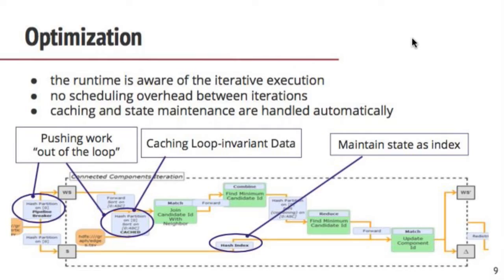Another thing we can do by letting the runtime know it's running an iterative job is perform several optimizations: we avoid scheduling overhead because the job plan is computed at the beginning, we can cache and maintain state in memory, and the Flink optimizer is smart enough to detect loop-invariant data — data used inside the iteration but never changed — and push it out of the loop so you don't have to read it again and again. We also maintain this state as an index so we can do very efficient point updates.